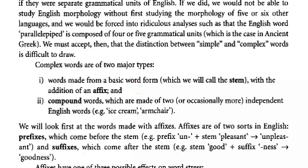Complex words are of two major types: words that have affixes — meaning the stem is there with affixes added — and compound words like 'ice cream' and 'armchair'.